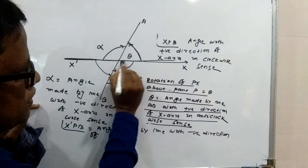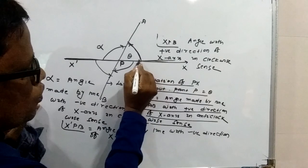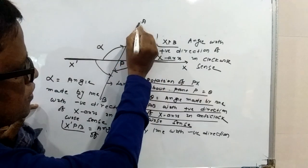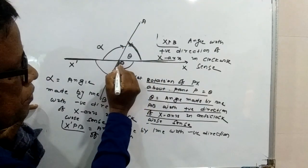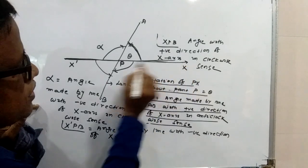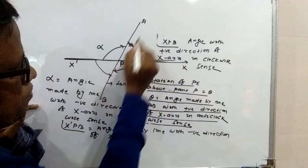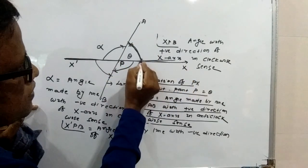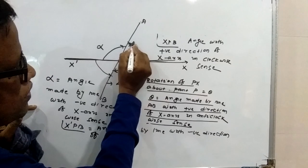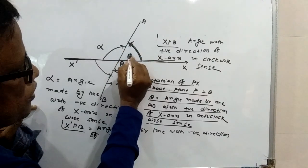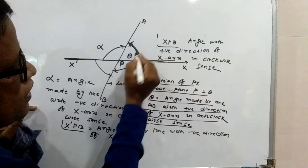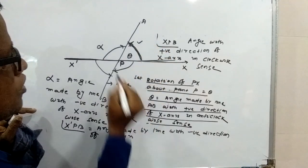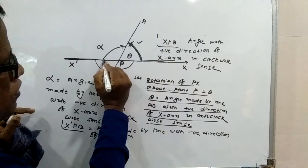What is anticlockwise sense? Here, PX — we are making an anticlockwise sense. Means this here, AP and PX. Here PX rotates anticlockwise and the amount of rotation is theta. Then this angle is your angle of inclination.